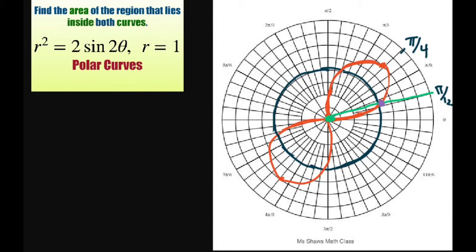So you have 2 sin 2θ equals, since this is r squared, just square this piece. Solving, you're going to get sin 2θ equals 1 half.